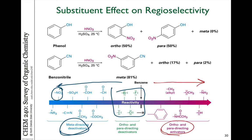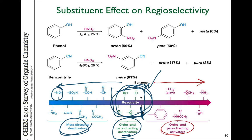The halogens are somewhat in between. They're slightly electron withdrawing, but also have lone pairs to donate back. So they are deactivating — slightly less reactive than benzene — however, they still direct groups ortho and para. That's something in the gray zone. For the purpose of this class, the stronger donating groups and withdrawing groups are the ones we should focus on in terms of distinguishing which way the electrophilic substitution will proceed.